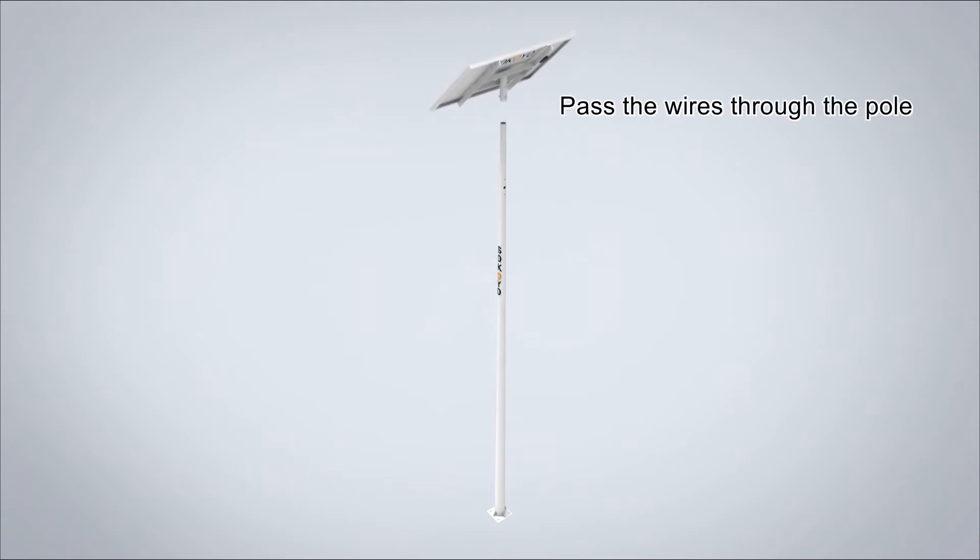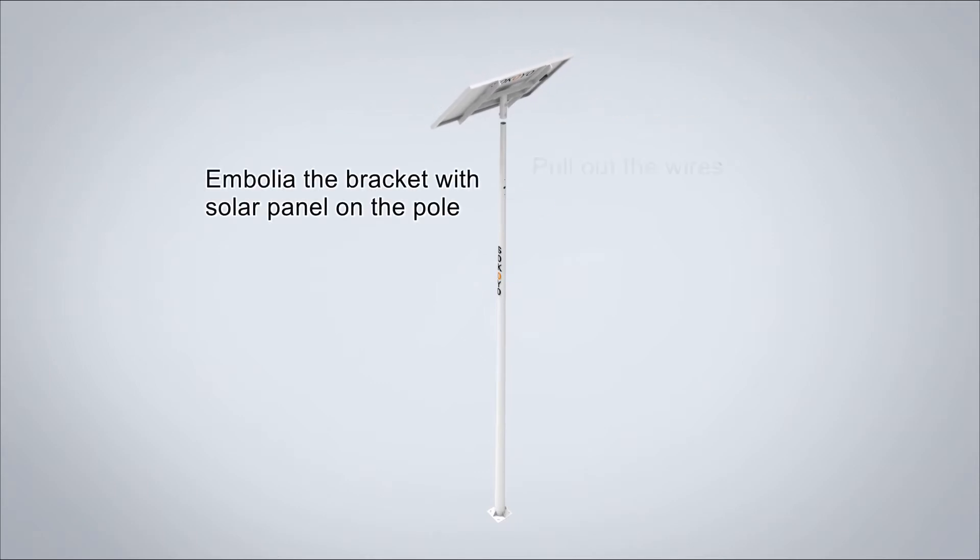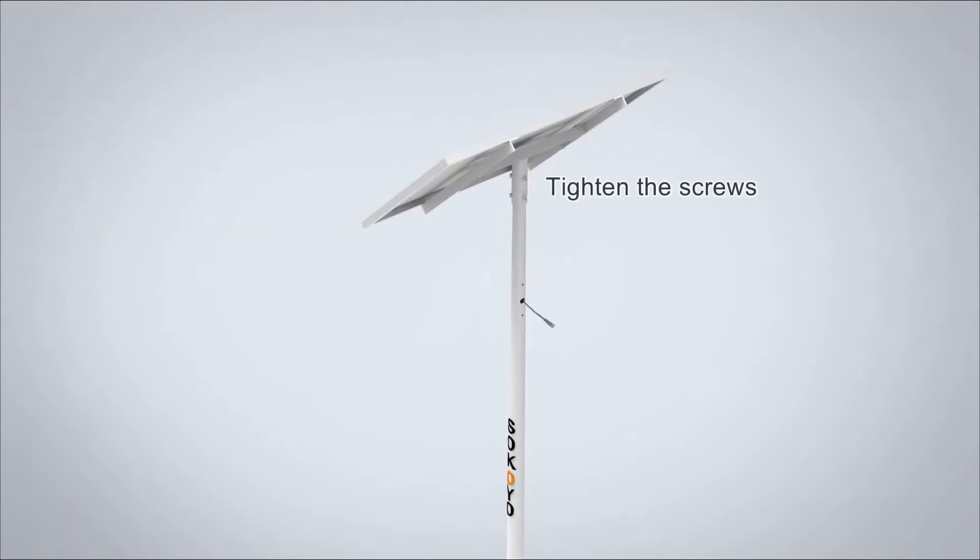Pass the wires through the pole. Install the bracket with solar panel on the pole. Pull out the wires. Tighten the screws.